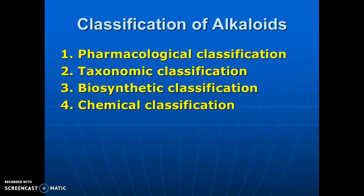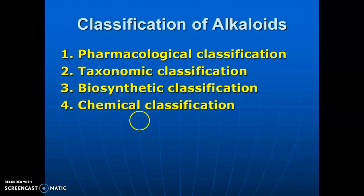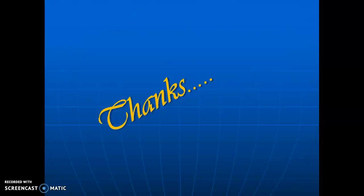This is the introduction part of alkaloids. Next is the classification of alkaloids. Alkaloids are basically classified by pharmacological classification, taxonomical classification, biosynthetic classification, and chemical classification, which we will study in the next session. Thank you very much.